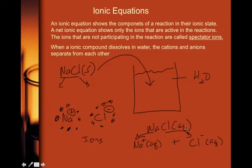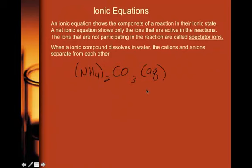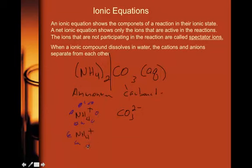If you have an ionic compound such as (NH4)2CO3 — ammonium carbonate — and it is aqueous, it means the same thing. We don't separate into individual nitrogens, hydrogens, carbons, and oxygens. We separate into the ions: we have an ammonium ion and a carbonate ion. So we get 2 NH4⁺ aqueous plus CO3²⁻ aqueous. We had two ammonium ions, which is why we write the 2.